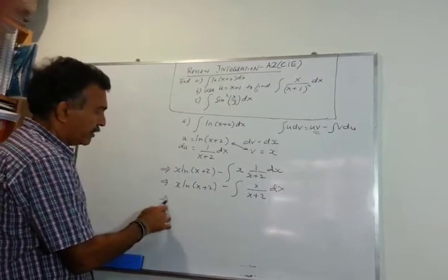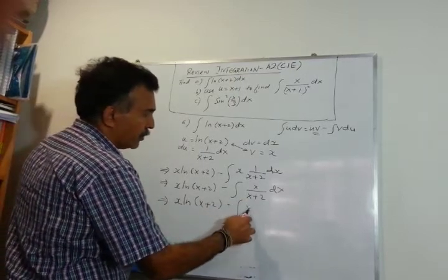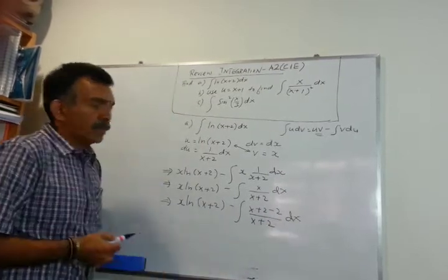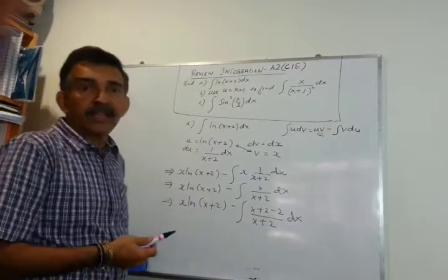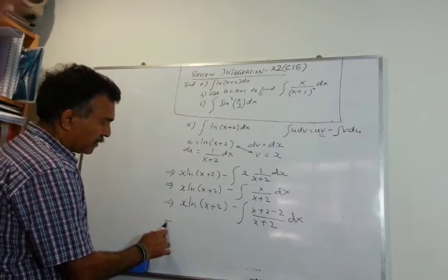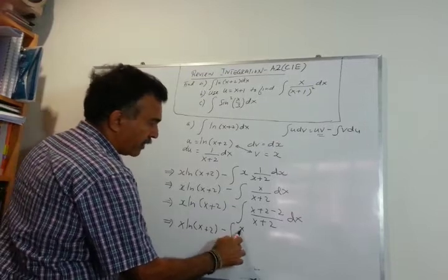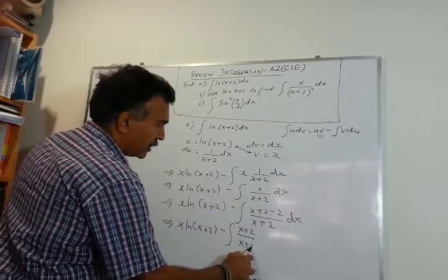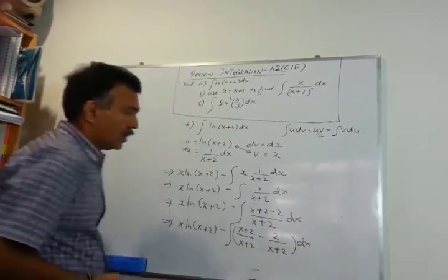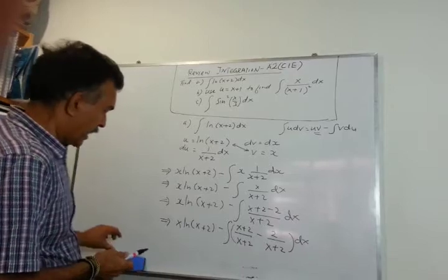Instead of long division, I'm going to add 2 and minus 2 to the numerator. To the numerator I've just added 2 and taken off 2, so I haven't changed anything. So I have (x+2) over (x+2) minus 2 over (x+2).